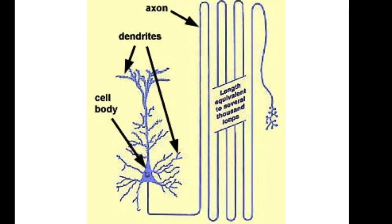As we move through different levels of organization and through different divisions and different regions of the nervous system, always keep in mind this basic functional unit — the neuron and its parts: the cell body, the dendrites, and the axon.